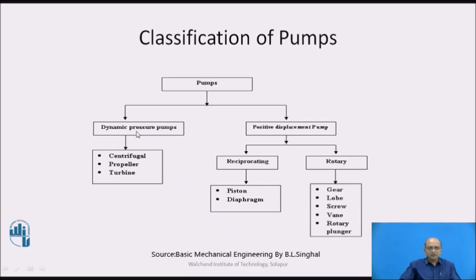Under the dynamic pressure pumps, we have the centrifugal pumps, propeller-operated pumps, and turbines. Whereas under the positive displacement pump, we have the reciprocating pumps and rotary pumps.